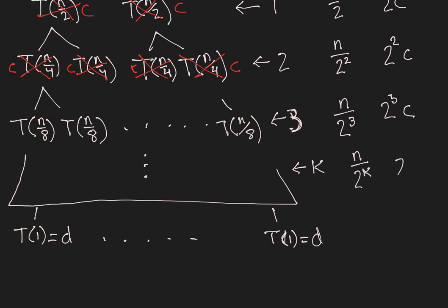And the question is, what's the bottom level, what is the value, what is the index of the bottom level? In other words, when we're at t of 1, what is the value of k?